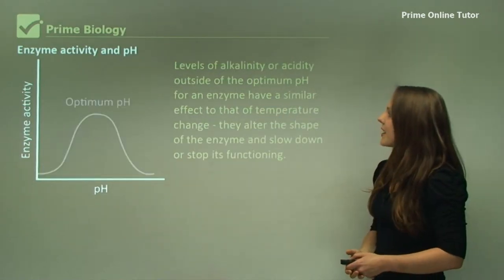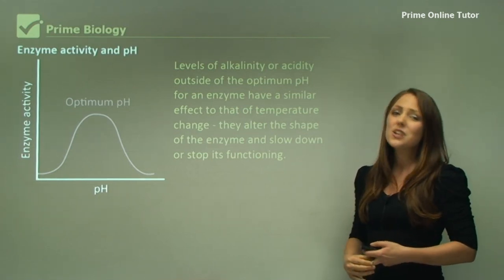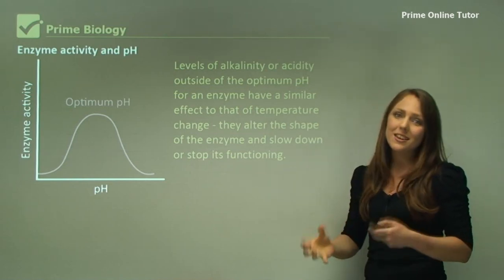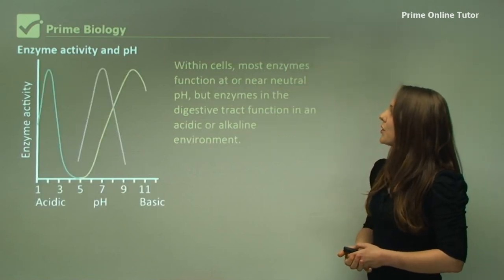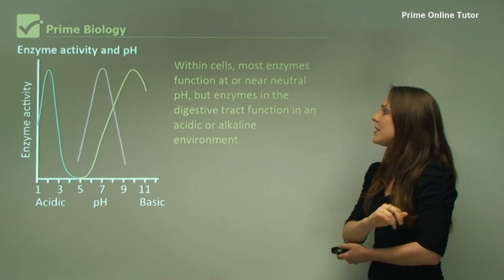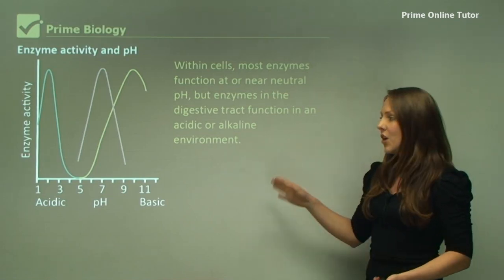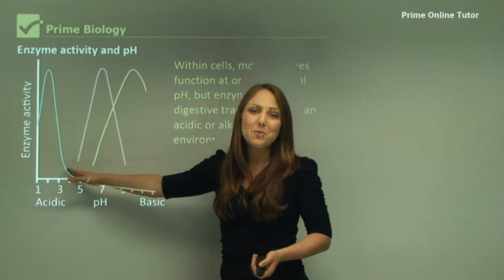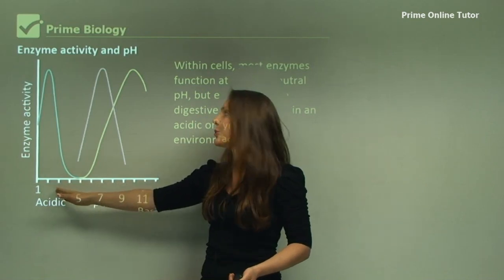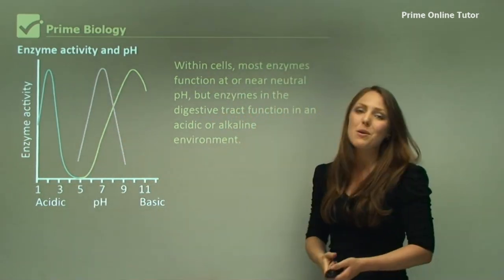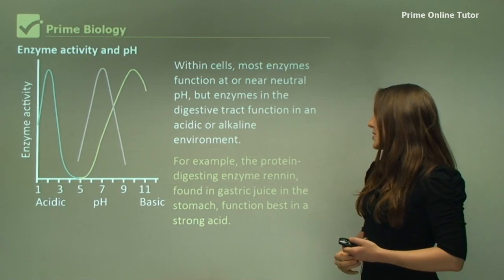Levels of alkalinity or acidity outside the optimum pH for an enzyme have a similar effect to that of temperature change. They alter the enzyme shape and therefore they alter the functioning of the enzyme. They will denature. Within cells most enzymes function at or near neutral pH, but enzymes in the digestive tract function in an acidic or alkaline environment. This enzyme here may represent pepsin - this is because its pH is around about 2. This pink enzyme here may represent amylase. Amylase can work at around about 6.5 to 7.